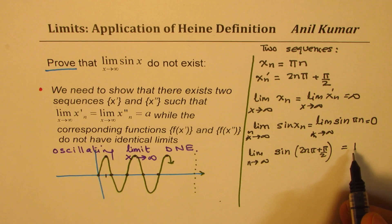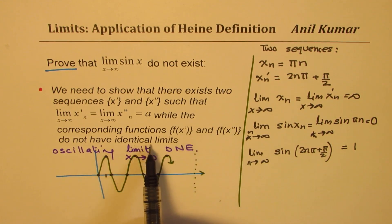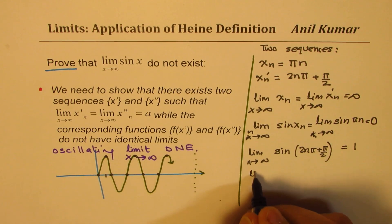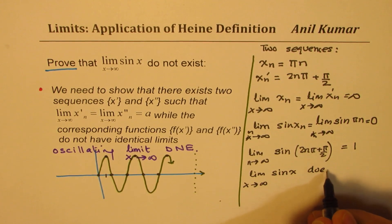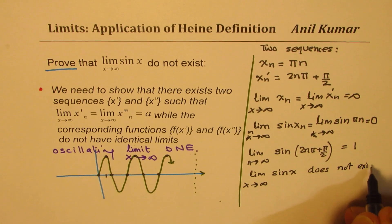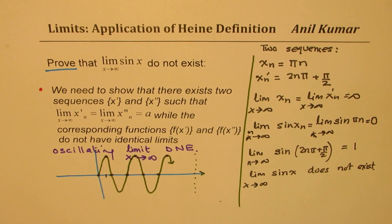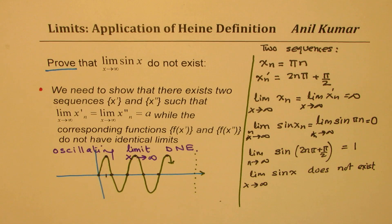Since these two limits are not the same — 0 versus 1 — we have proved that the limit as x approaches infinity for sine x does not exist. For solving or proving such limits, we take two sequences and show that the function limit with those two sequences is not the same. If that is the case, the limit does not exist. Feel free to write your comments, share your views, like and subscribe. Thanks for watching and all the best.